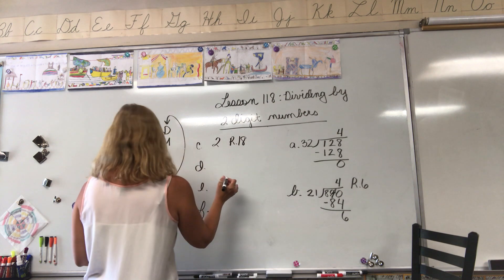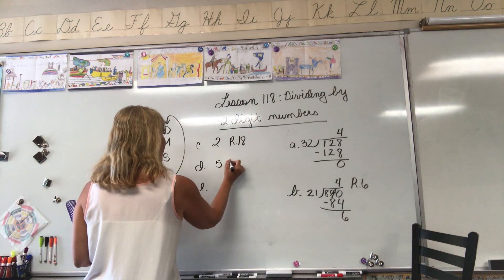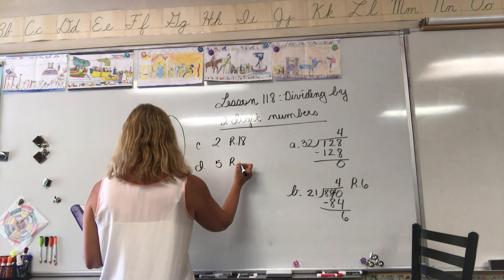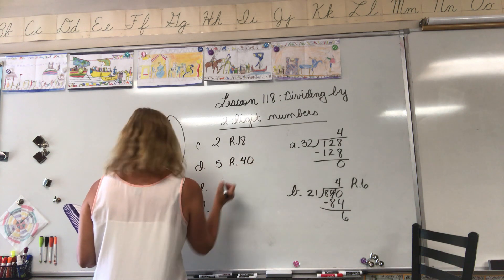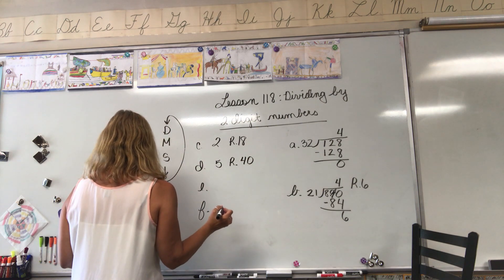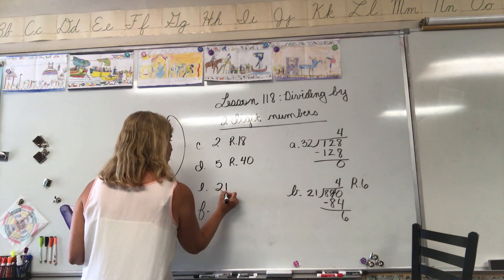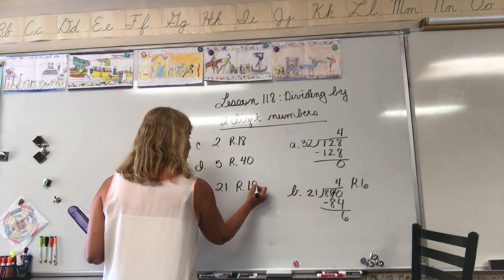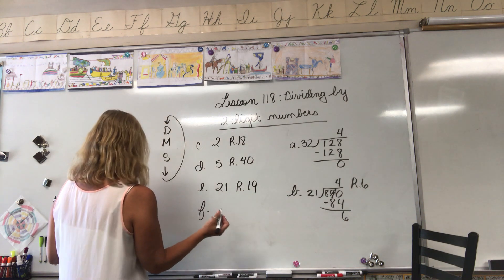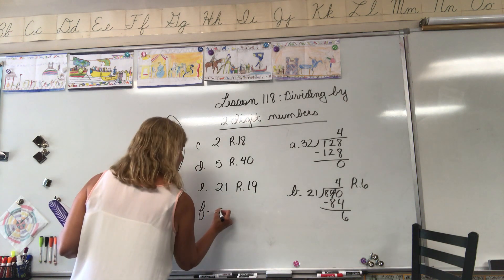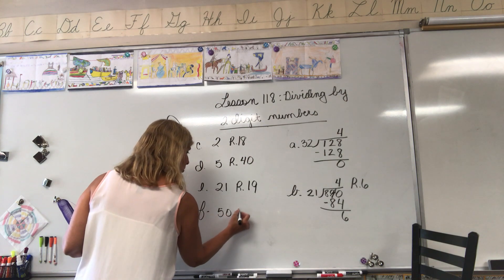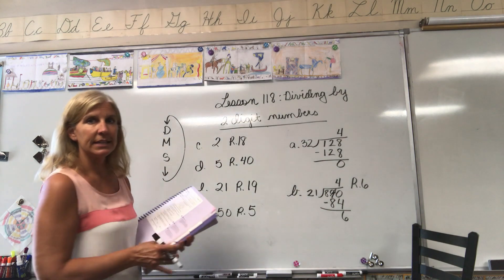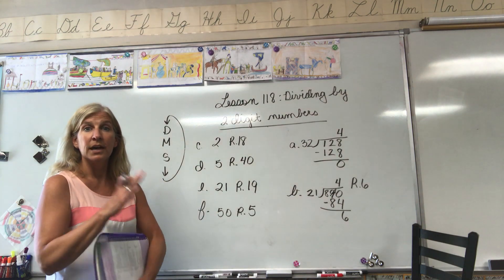All right, all right, so your answers should have been for C, 2 with a remainder of 18. For D, 5 with the remainder of 40. E is 21 with the remainder of 19, and F is 50 with the remainder of 5.